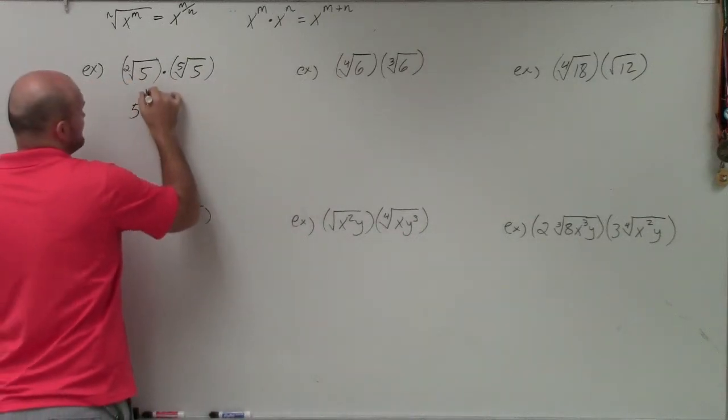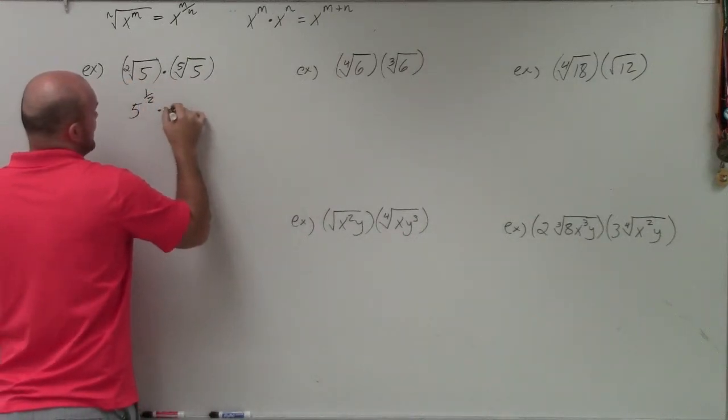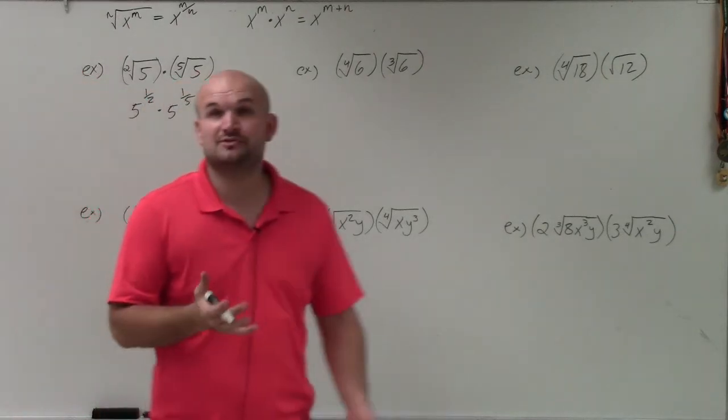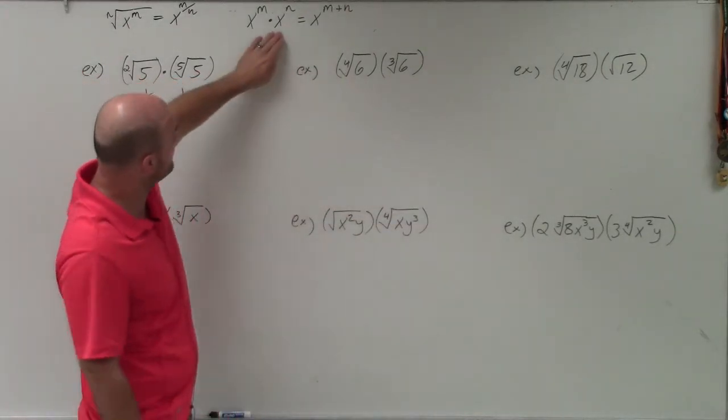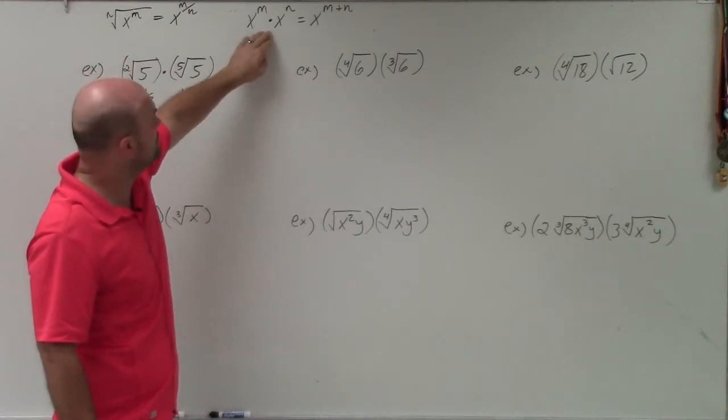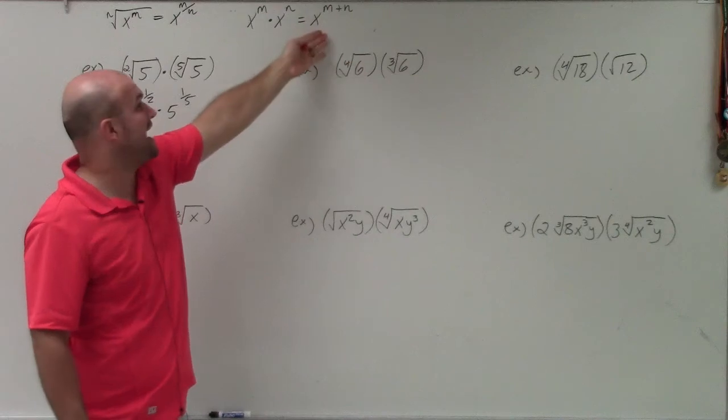So therefore, I'll rewrite this as 5 to the 1 half times 5 to the 1 fifth. And then what we can do now is use our properties of exponents that state whenever we multiply two exponents, then we simply are just adding the powers. However, remember the bases have to be exactly the same.